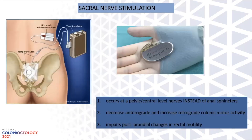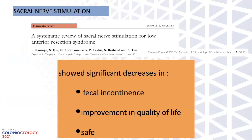Sacral nerve stimulation has traditionally been prescribed for patients with incontinence. In LARS, it works by stimulating nerves at the pelvic and central level rather than only working on the anal sphincter muscles. It decreases antegrade and increases retrograde colonic motor activities, and impairs postprandial changes in rectomotility. A systematic review showed patients receiving sacral nerve stimulation had decreased fecal incontinence and improved quality of life.